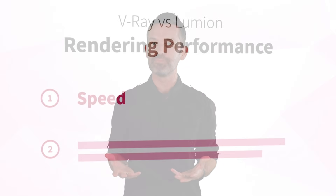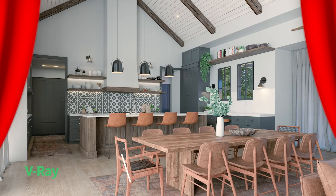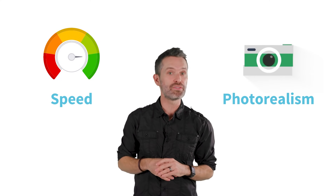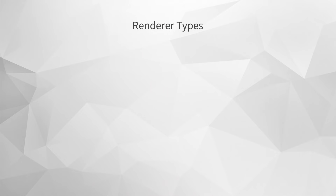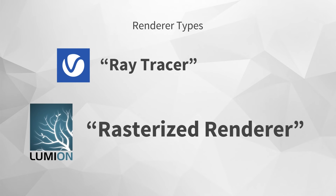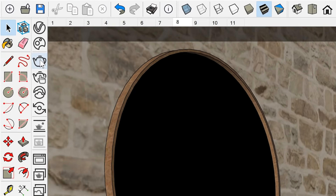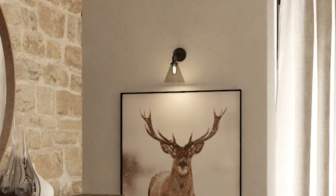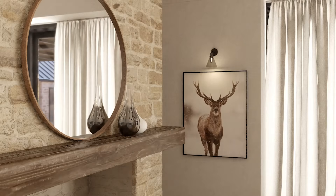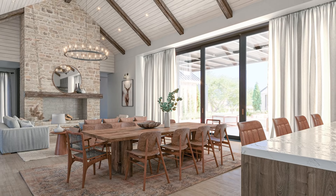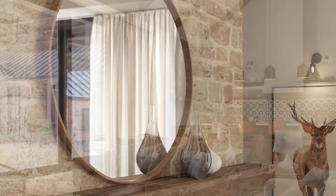So why is Lumion so much faster? V-Ray and Lumion approach rendering in two fundamentally different ways. In tech lingo, V-Ray is what's called a ray tracer, and Lumion is what's called a rasterized renderer. When you click the render button in a ray tracer like V-Ray, the software is actually calculating the trajectory of every ray of light in the scene and how it bounces around your model. It's an intensive calculation, but ray tracing allows you to achieve the highest quality, most photorealistic result — because it mimics real-world lighting, giving you fully accurate shadows, reflections, and refracted light.